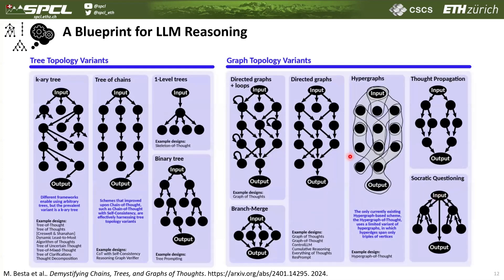We also dive deeper into different variants of these tree and graph topologies — for example, covering and describing schemes that use k-ary trees, tree of chains, and binary trees. As for graphs, things like directed graphs with loops, simplified graphs that have the form of branch-and-merge, even hypergraphs, and other types of topologies.